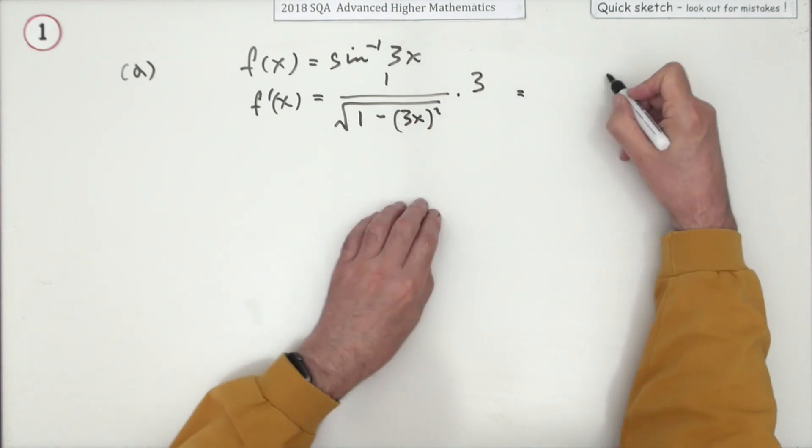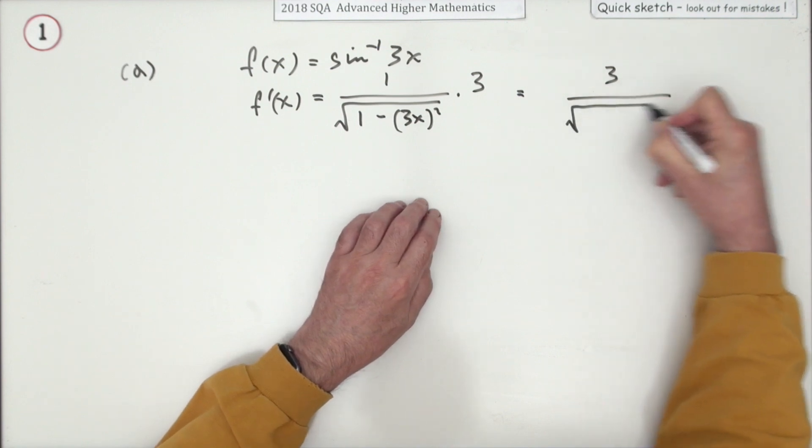Now I'll have to tidy that up because there's not a lot you can do with that. So you've got 3 on top, a square root, and 1 minus 9x squared.